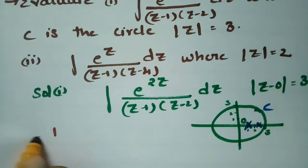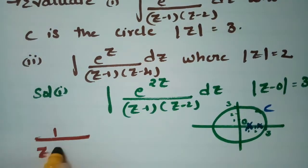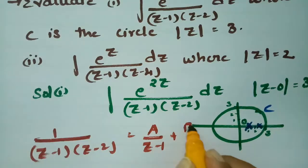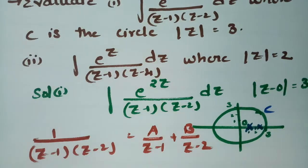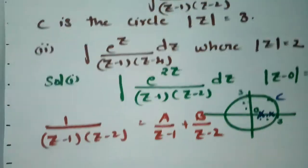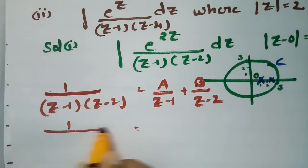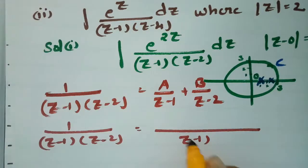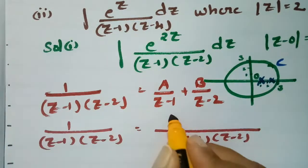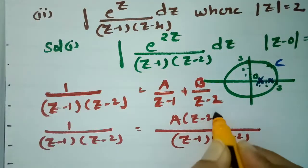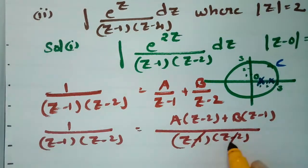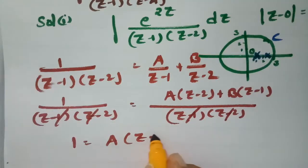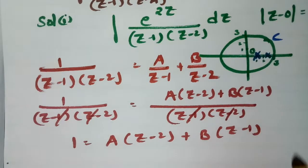First, I am going to resolve 1 / [(z-1)(z-2)] into partial fractions as A/(z-1) + B/(z-2). Taking LCM as (z-1)(z-2) and cross-multiplying: 1 = A(z-2) + B(z-1).